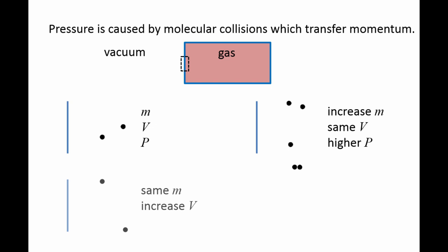Alternatively, if we had kept the number of molecules the same but increased their velocity, the pressure also would be higher than in the first case. The highest pressure would occur if we increased both the number of molecules and their velocity.